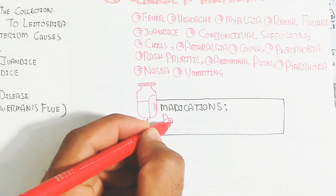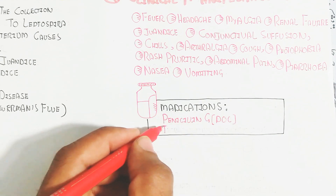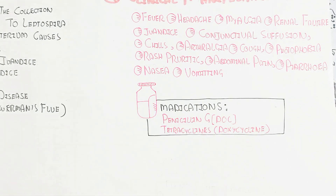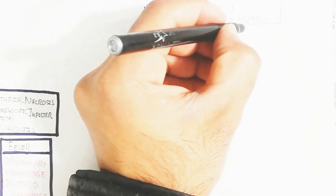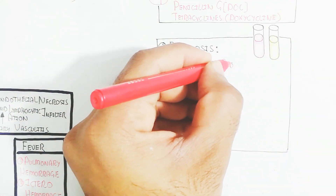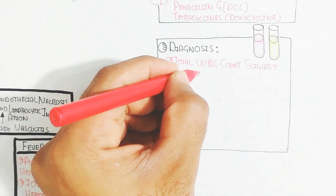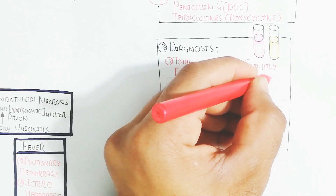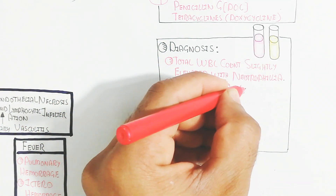Medication includes penicillin — the antibiotic will prevent leptospirosis through bacterial growth inhibition — and tetracycline. Diagnosis is through urine, blood, and cerebrospinal fluid. The total WBC count is slightly elevated with neutrophilia.